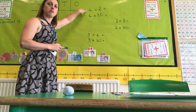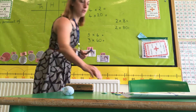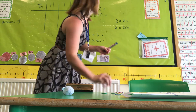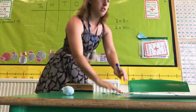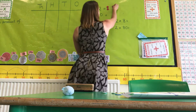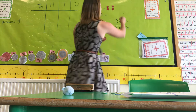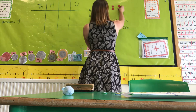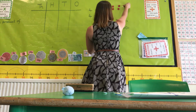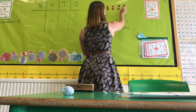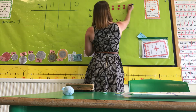So this multiplication here: I have 4 times 2. Now we know that 4 times 2, there's 2 and another 2 and another 2 and another 2. So if I've got 4 groups of 2, I've got 2, 4, 6, 8 in total.